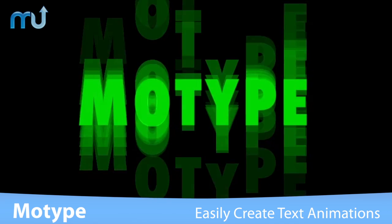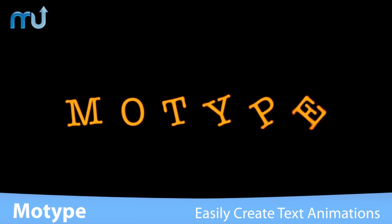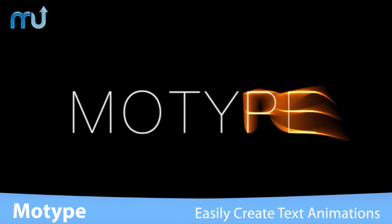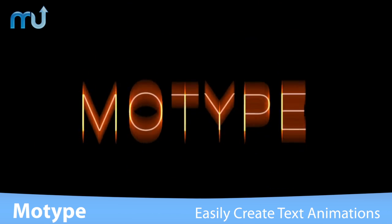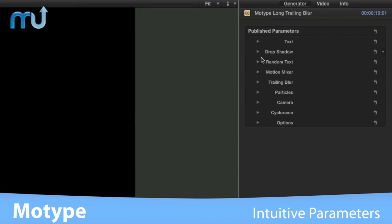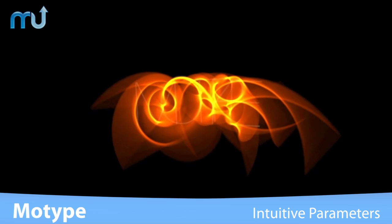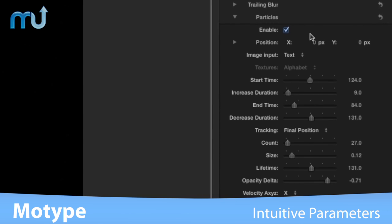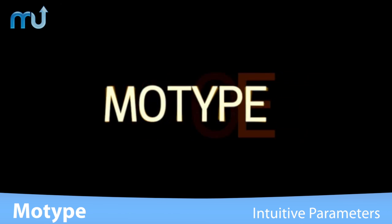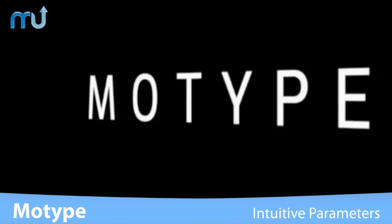MoType allows you to create complex text animations in minutes, thanks to a powerful motion mixer that does away with keyframing. This revolutionary title generator includes an intuitive set of parameters that let you configure motion blur per character, particle emitters, randomized characters, and a 3D camera and environment.